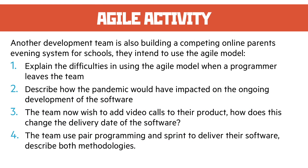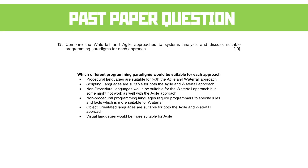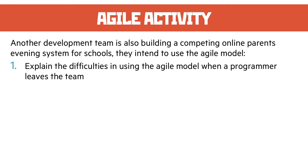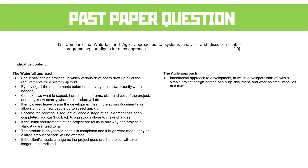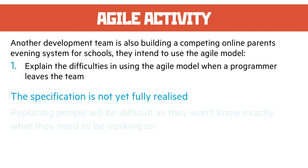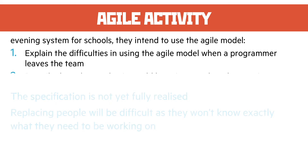The agile activity covers the same situation but this time the team are using an agile model. Question one: explain the difficulties in using the agile model when a programmer leaves the team. Unlike the waterfall model, when a member of the team leaves we haven't got a full specification — we don't really know what we are doing on a grand scale yet. Replacing people will be difficult as they won't know exactly what they need to be working on or the scope of the problem.